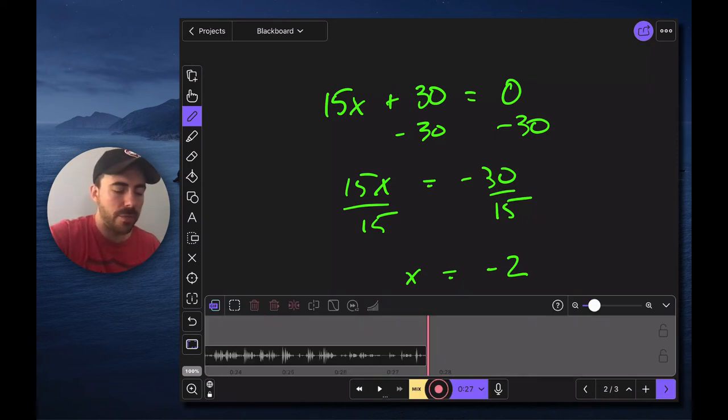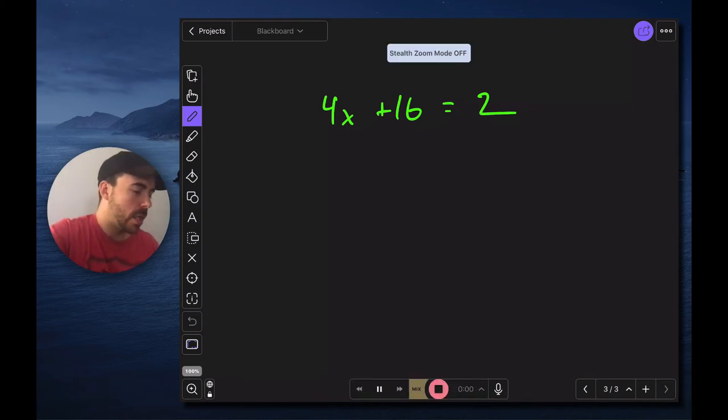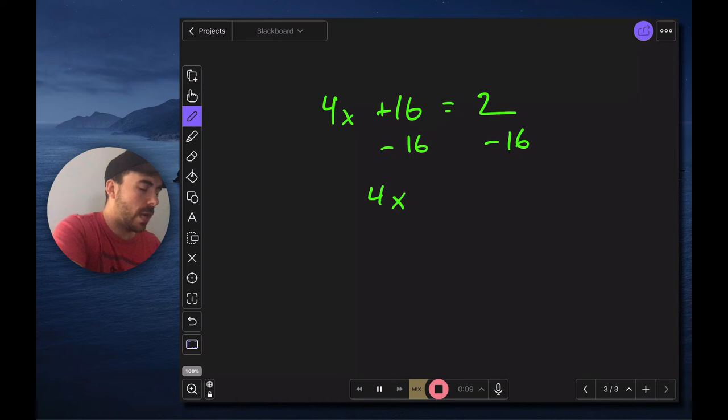And then I can go on to my third page. All right same thing record. All right so 4x plus 16 equals 2. First thing I have to do is subtract 16 from both sides. And then it leaves me with 4x equals negative 14. And then x equals negative 14 over 4. But that could be simplified. So I have x equals negative 7 halves. Like so. Stop.